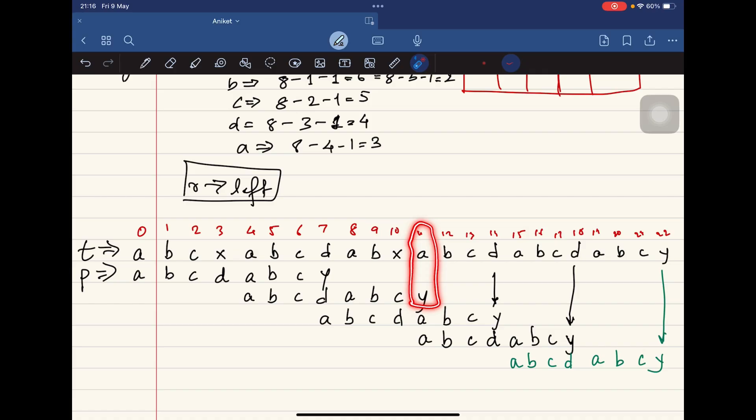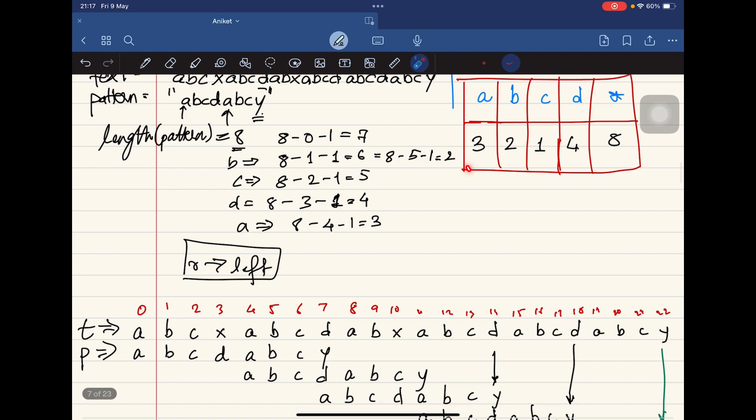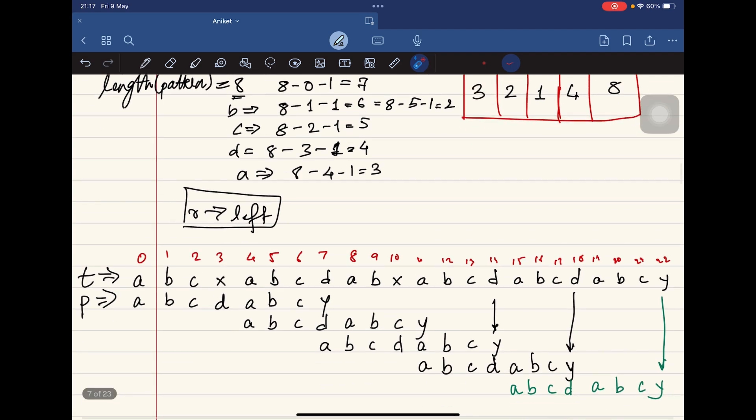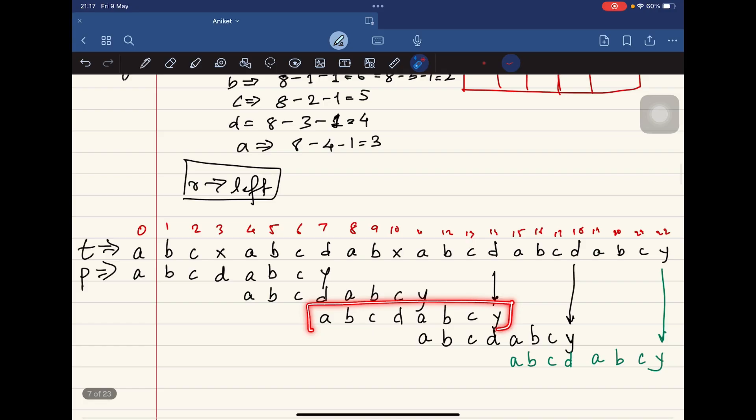We find A and Y, which is again a mismatch. So check the value of A in the bad match table. It is 3. So we move three steps ahead: that is 1, 2, and 3. Now this is the new position that we need to check for comparisons, whether this string exists or not.